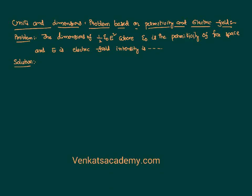Hello everybody. Today in this video lesson we are going to solve a problem based on units and dimensions. We want to calculate the dimensions of a physical quantity called half epsilon naught E squared, where epsilon naught is the permittivity of free space and E represents electric field intensity. We need to find the dimensional formula of half epsilon naught E squared.